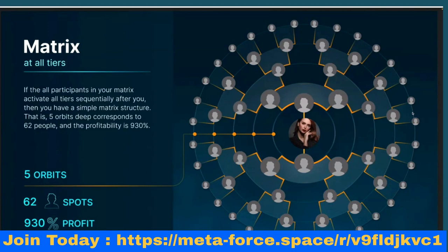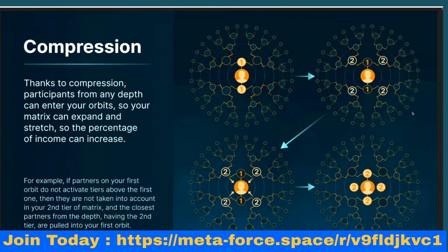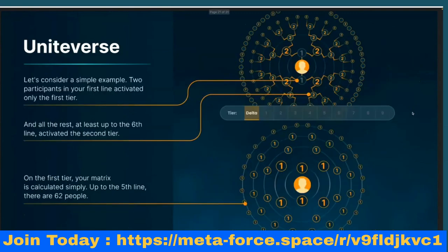There is a unique mechanism called compression introduced with UniVerse. Thanks to compression, participants from any depth can enter your orbits — your matrix can expand and stretch, so the percentage of income can increase beyond 930%. For example, if partners on your first orbit do not activate tiers above the first one, they are not counted in your second-tier matrix. The closest partners from the depths who have the second tier are then pulled into your first orbit.